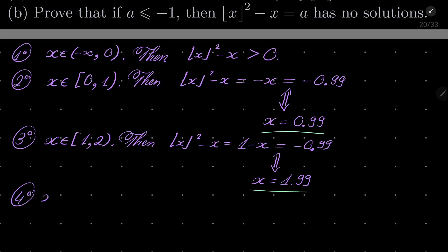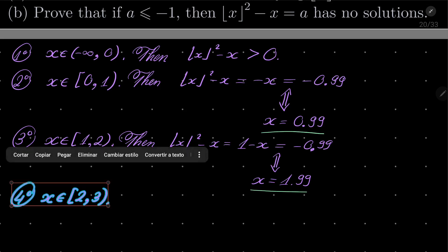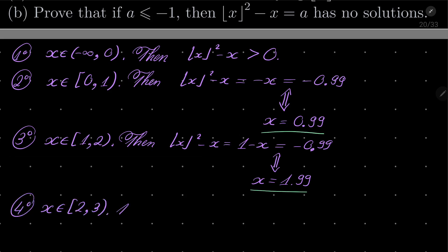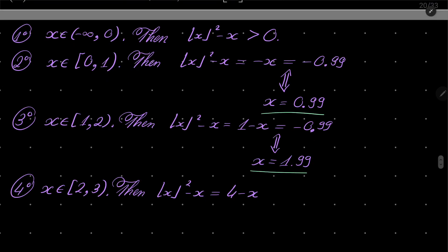Fourth case: x is between 2 and 3. Then floor of x squared minus x — floor of x is 2, but it's squared, so it's 4 — giving 4 minus x. Notice that 4 minus x is for sure greater than 0, because if x is between 2 and 3, then x is less than 4, so it's positive. So we have no solutions. No solution in the first case and no solutions in the fourth case.